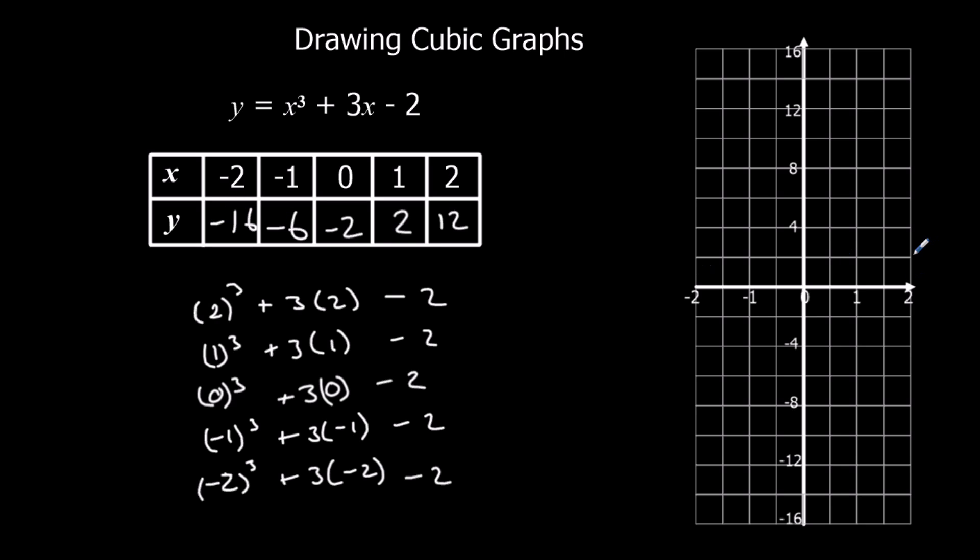And again, we plot it on the graph, so 2, 12, 1, 2, 0, minus 2, minus 1, minus 6, and minus 2, minus 14. Join them up for smooth curve.